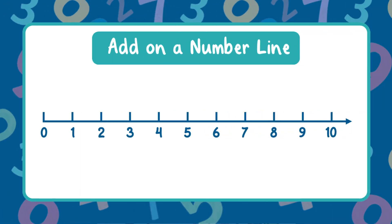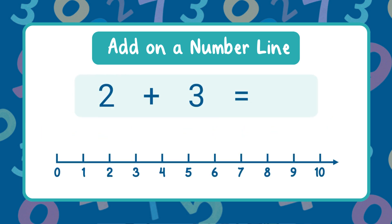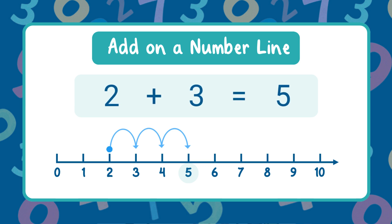Our next strategy is to use a number line. A number line is a line that shows numbers in order; it usually starts at zero and goes up one number at a time. We can use it to add by starting at the first number and hopping forward. Let's try the number sentence two plus three. Start by finding the number two on the number line, now hop forward three spaces: one, two, three. You land on five. The sum is five, so two plus three equals five.